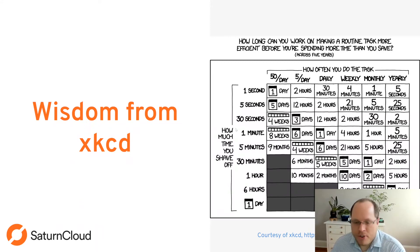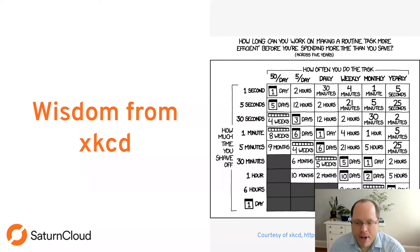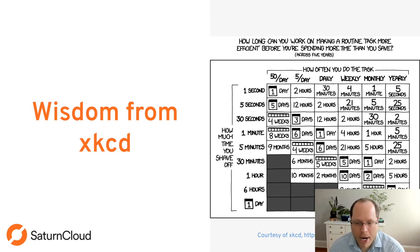First, think about when you actually want to optimize. This XKCD table — which I actually have on my wall — shows how long you can work making something more efficient before spending more time than you save. If you're doing something only once, a couple minutes of time savings may not be worth an hour of optimization work. My personal threshold is about an hour: if a loop is going to take an hour to run, that's when it's time to start thinking about making it faster.